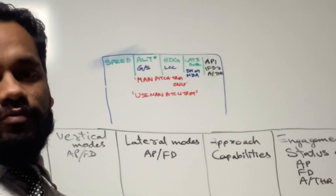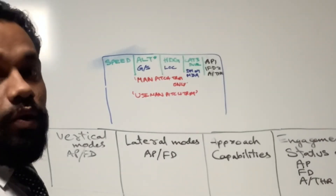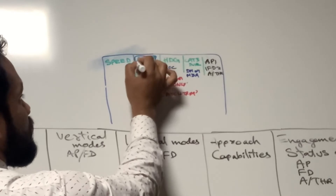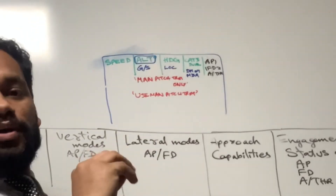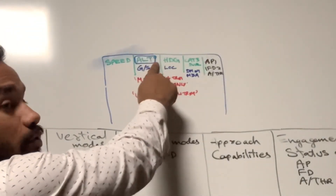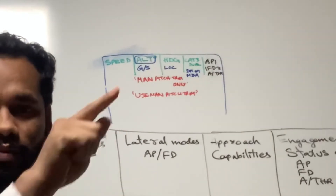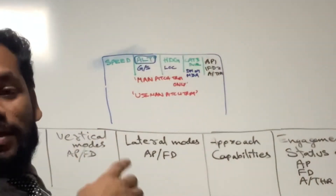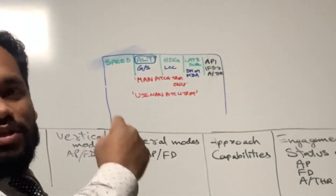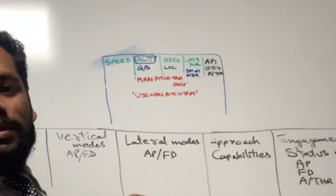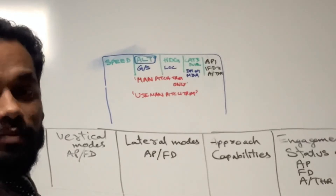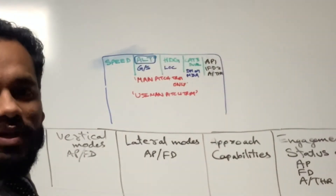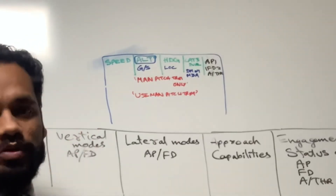Whenever a new FMA appears, it is always enclosed within a white box. So the new FMA which has just occurred will initially be boxed in white — meaning a new mode has just triggered. This white box disappears after 10 seconds, and sometimes it may be 15 seconds as well.